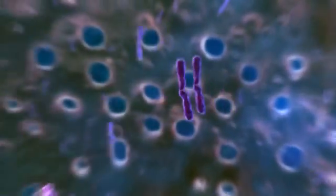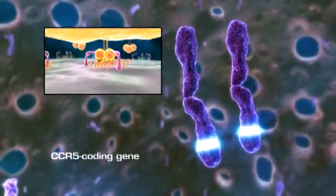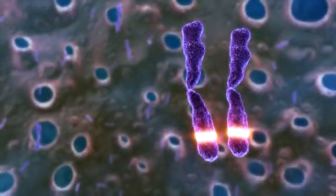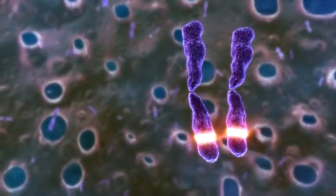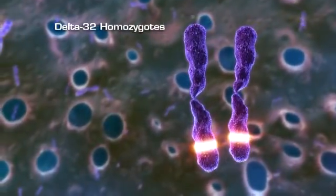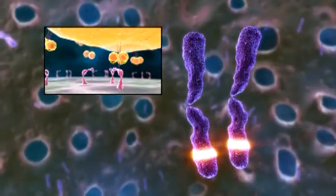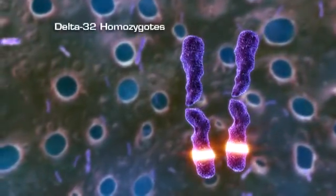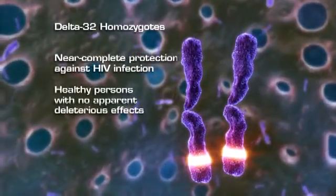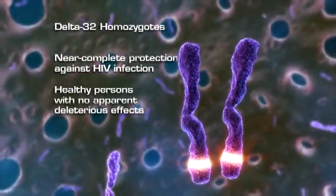Persons with two normal copies of the CCR5 gene predominate in the population and are susceptible to HIV infection. Persons who inherit two copies of the CCR5 Delta 32 variant from their parents, known as Delta 32 homozygotes, have no functional CCR5 coreceptors and appear to be highly resistant to HIV infection. Delta 32 homozygosity appears not to be associated with any significant deleterious effects.